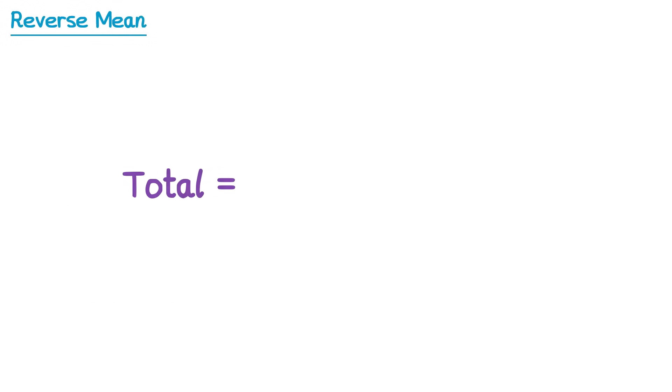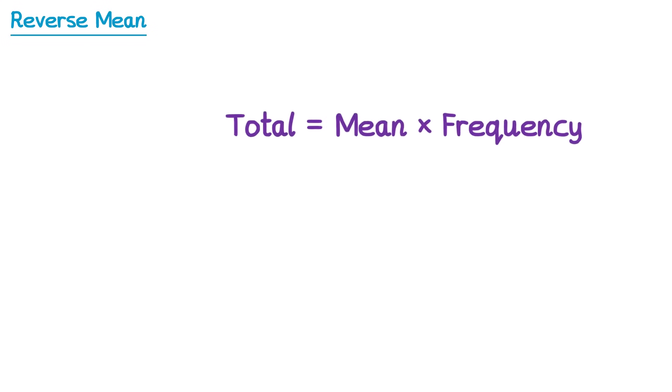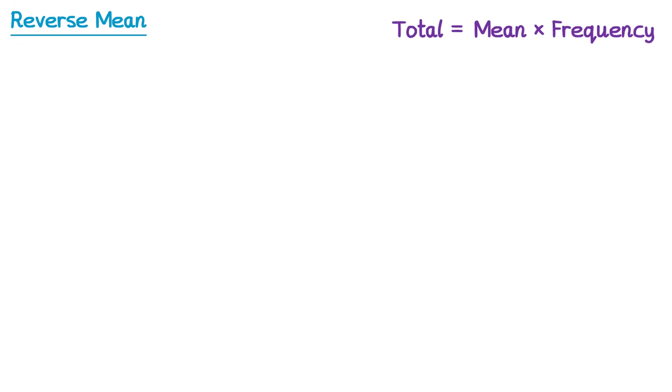In these questions we're using the idea that we can work out the total by multiplying the mean by how many numbers there are, which I've called the frequency. I'll keep this at the top as a reminder as we work through some harder questions. Sometimes exam questions on this topic can be quite wordy — let's have a look at some examples.